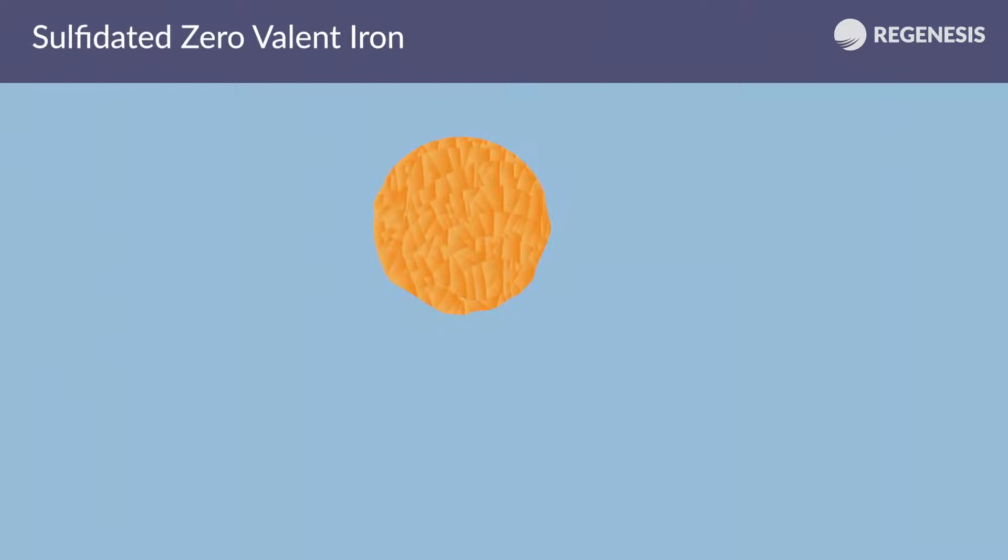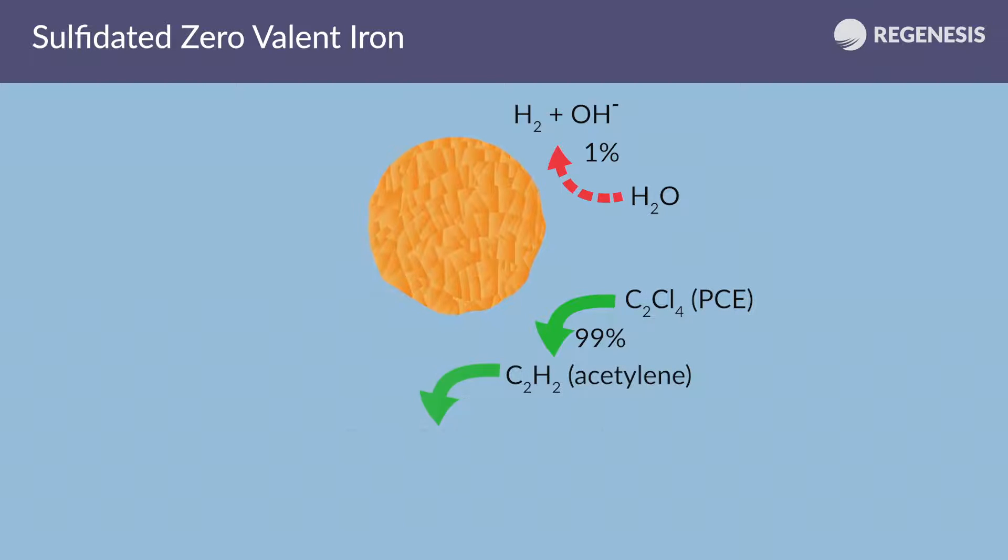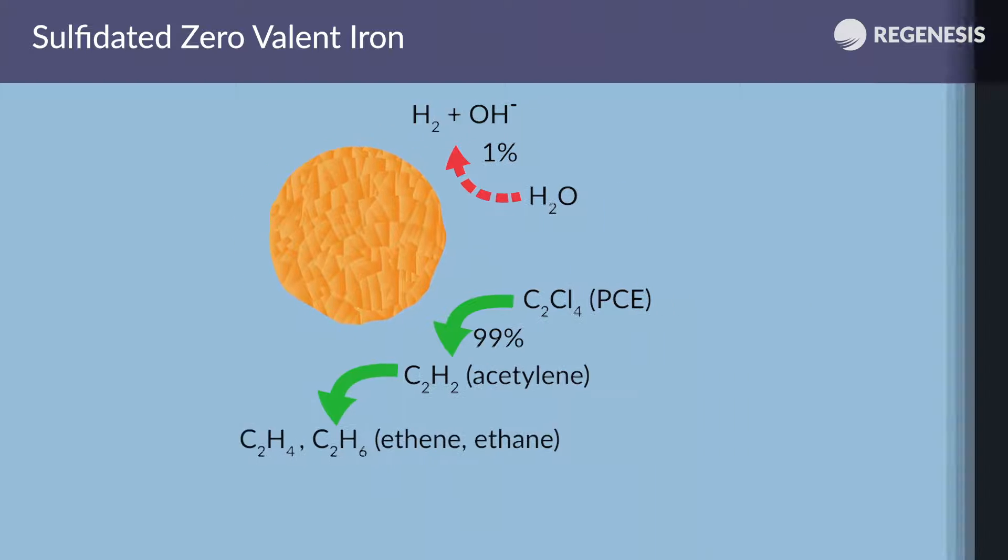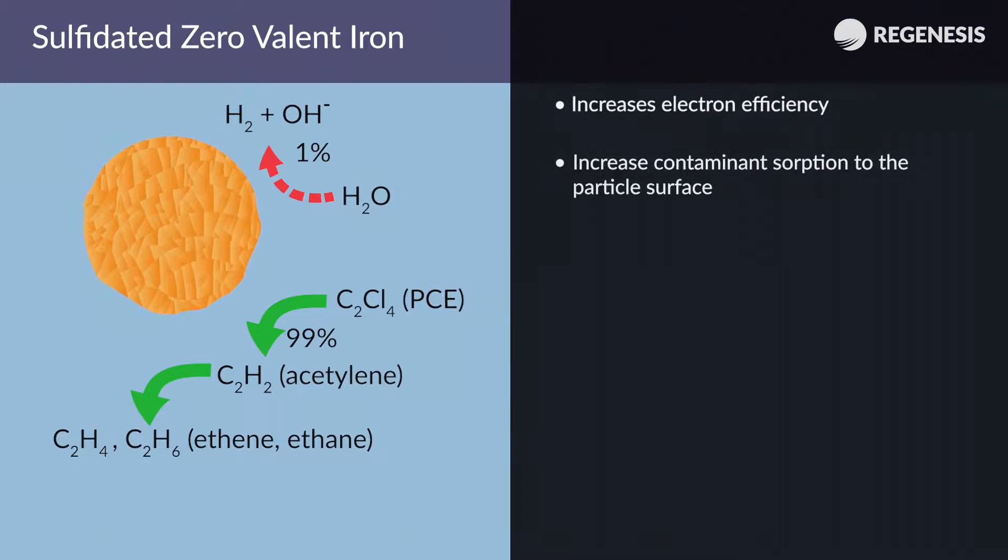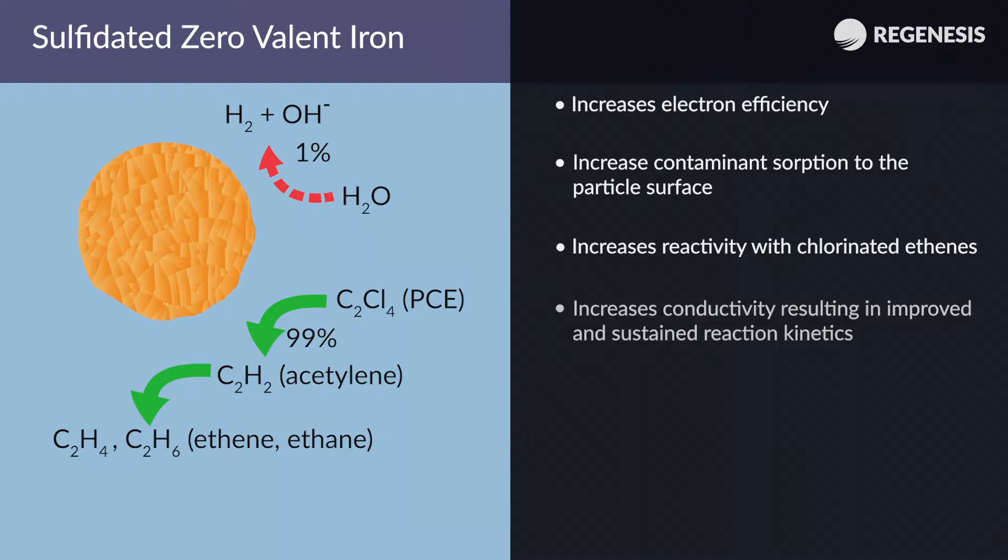With S-Micro-ZVI, the situation is reversed. Due to the hydrophobic iron sulfide layer, polar contaminants are adsorbed and electrochemically reduced, while hydrolysis is minimized. This results in a high electron efficiency and enhanced reaction rate with the chlorinated ethenes.